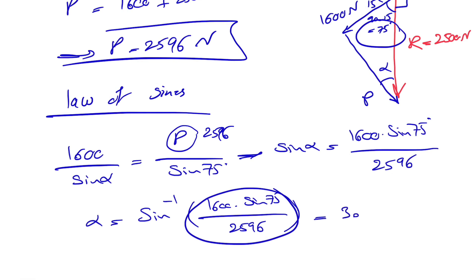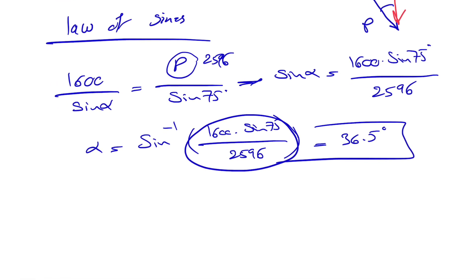But that's not over. So far what we found here was the angle alpha, but the way we report P at the end is that we found our P, this one, which will be the line of action here. So we have this angle here, 36.5, so if that's the angle, this one is also 36.5.